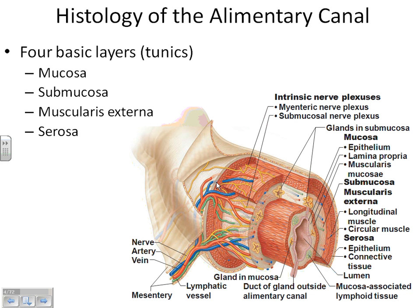As we go through each primary organ, we're going to see the same four layers — in the pharynx, the stomach, the intestines, all the way through. One of the layers looks different in every place, but it's always the same four layers. Starting from the inside, the deepest layer is called the mucosa. The gap in the middle is called the lumen, and through the lumen is where the food passes, coming first into contact with the mucosa.